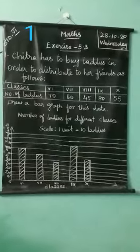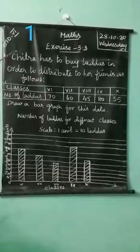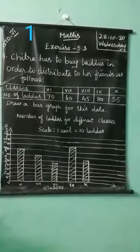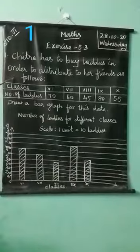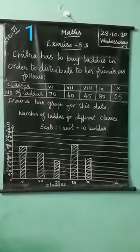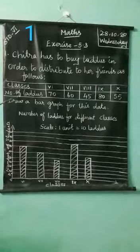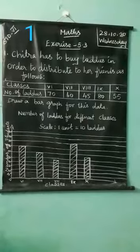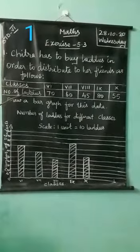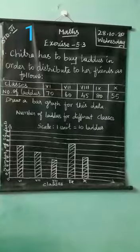See the question. Chitra has to buy laddoos in order to distribute to her friends as follows. Classes and number of laddoos — data is given. How many classes? 6th, 7th, 8th, 9th and 10th.